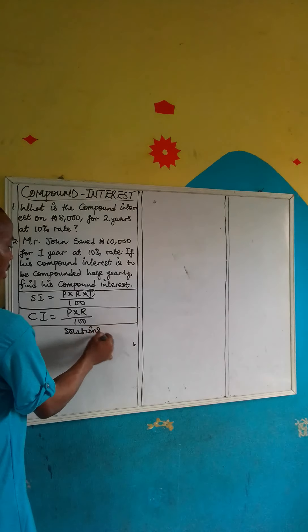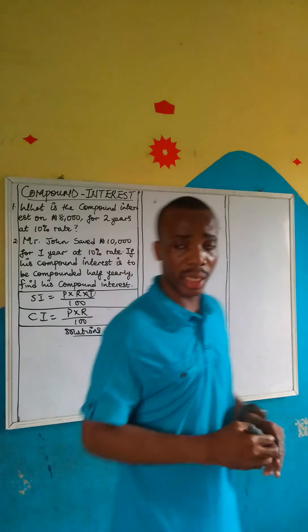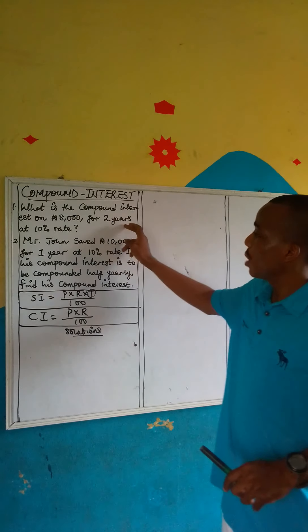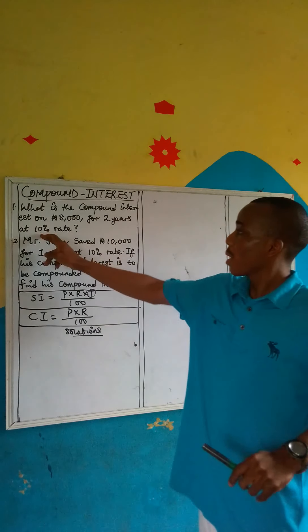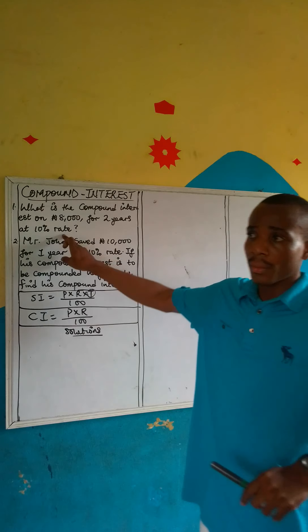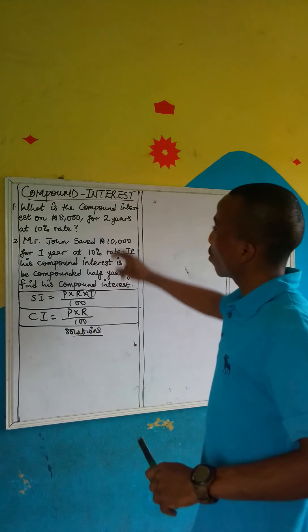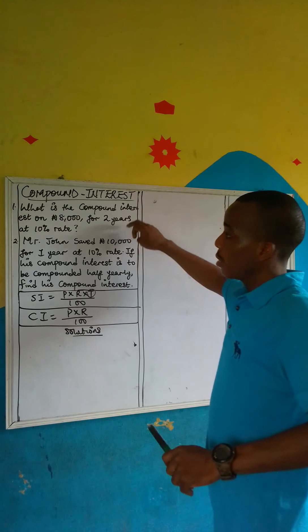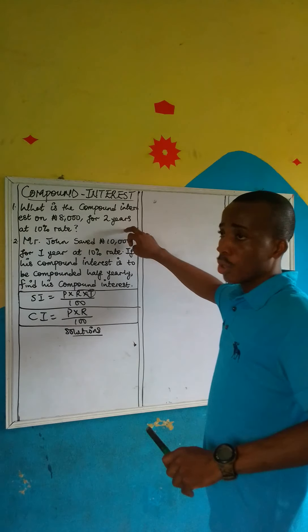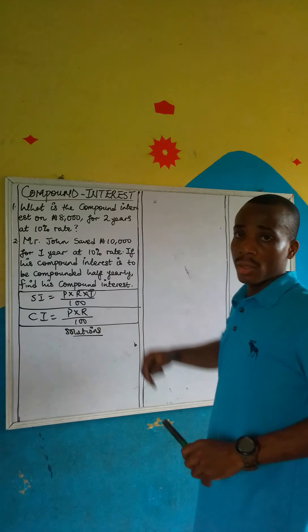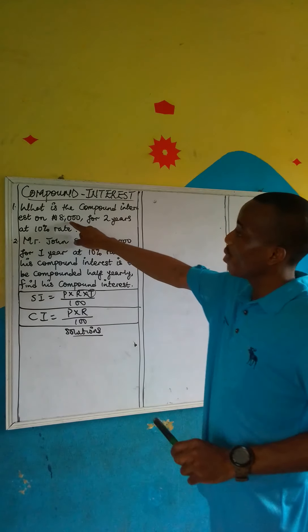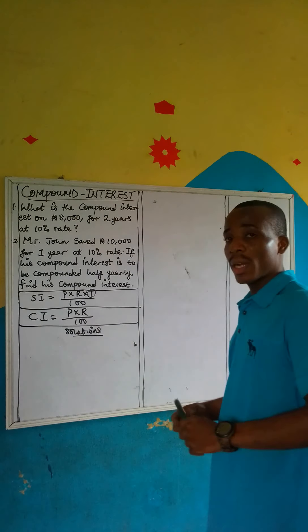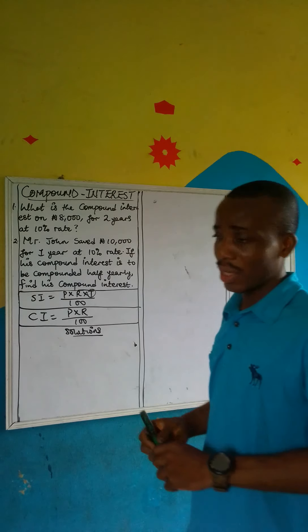Without wasting time, let's start with the problems. It says: what is the compound interest on 8,000 for two years at 10% rate? We need to calculate for the first year and calculate for the second year, then subtract our total amount from the initial principal — 8,000 — to give us our compound interest.